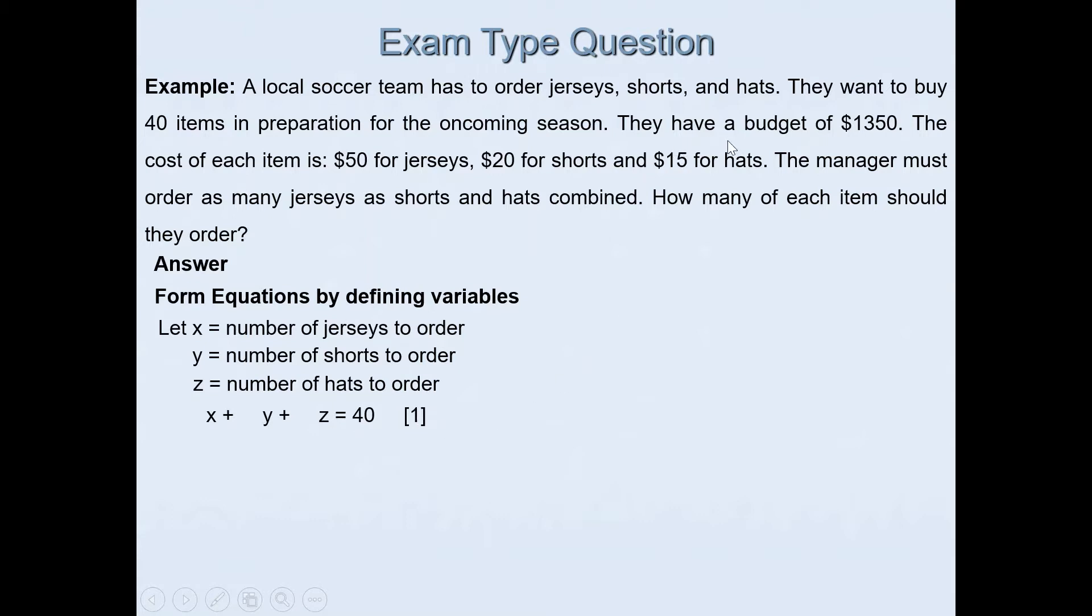We are also told that they have a budget of $1,350, and the cost for each item is listed. So we can put that information together. 50 times the number of jerseys, so 50x + 20y + 15z should equal the budget of $1,350. This is our second equation.